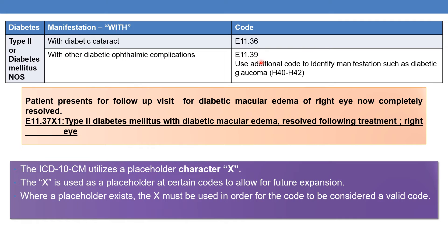In addition to E11.39, you need to use an additional code to identify the manifestation. For example, diabetic glaucoma can be a manifestation of diabetes mellitus. In this case, in addition to E11.39, you can use the glaucoma codes which come under category H40.2 or H42.